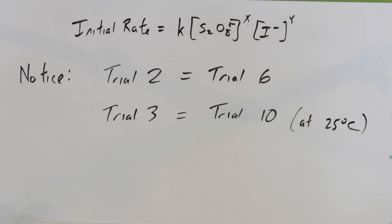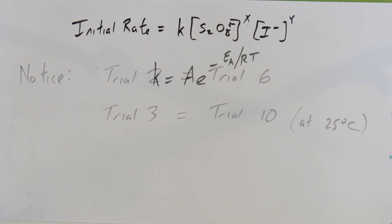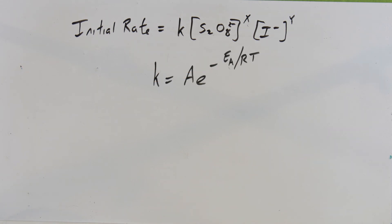When doing the temperature trials, also be aware that trial number three, done at room temperature or roughly 25°C, is the same as trial ten. Trials nine through twelve are temperature trials. You can do that trial again or just keep the number — unless there's a drastic temperature change, there's no reason to repeat it. You can also use it as troubleshooting to see if the values match.